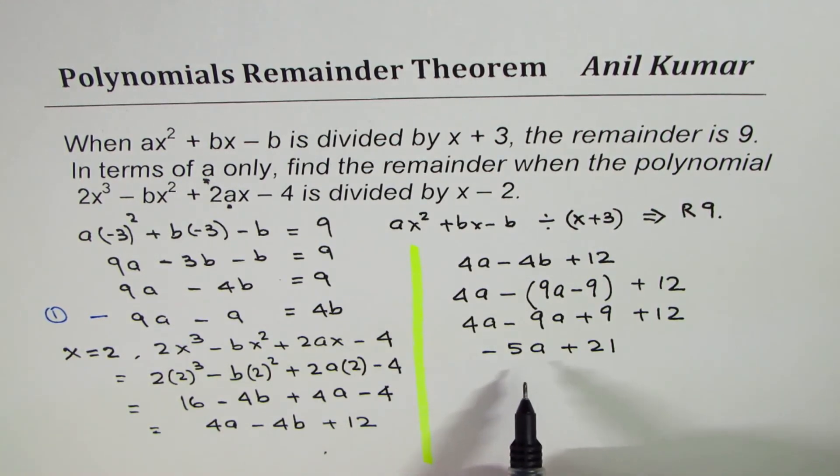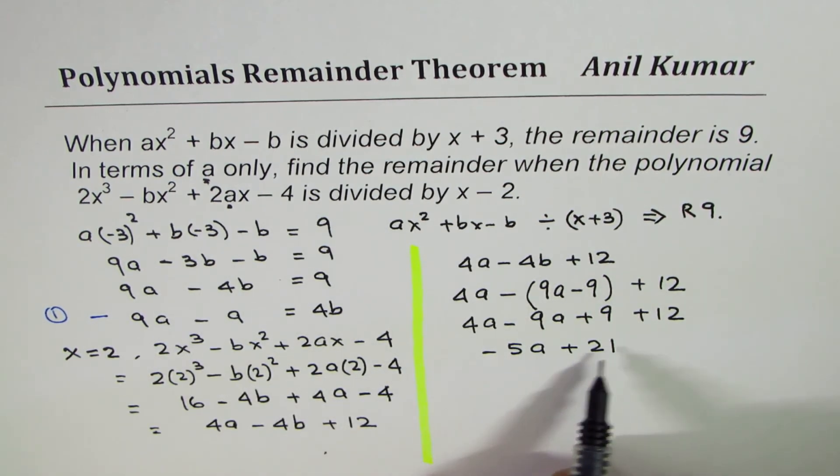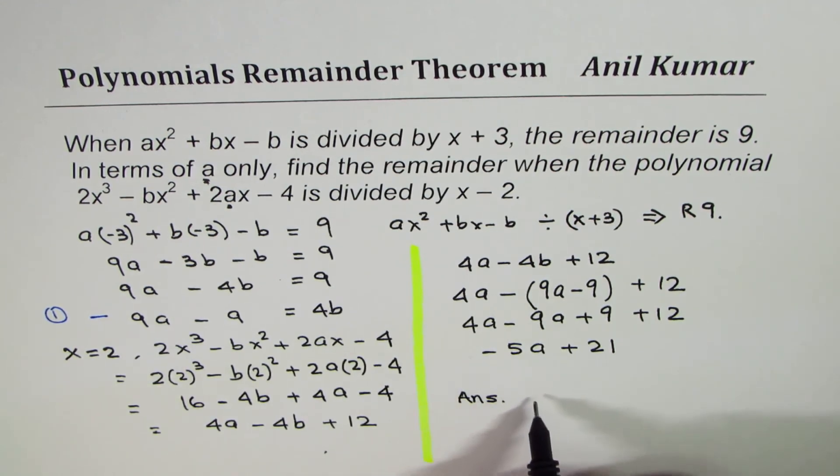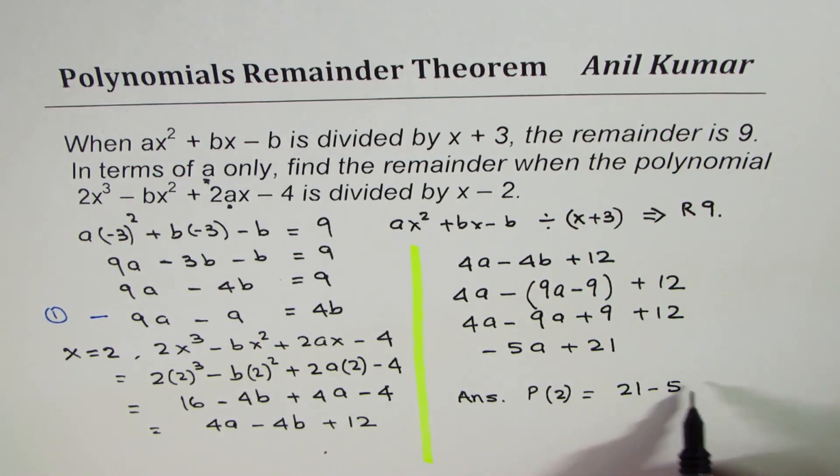So in terms of a, the value of the function is 21 minus 5a. So our answer is value of this polynomial, let's call this p, at 2 is equal to 21 minus 5a.